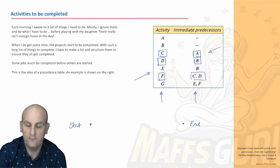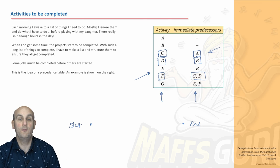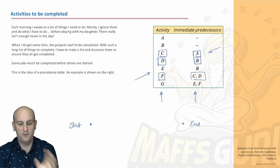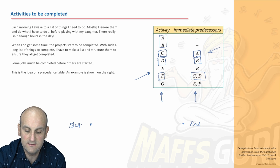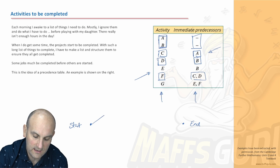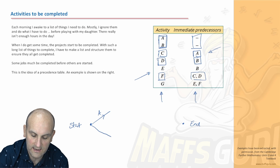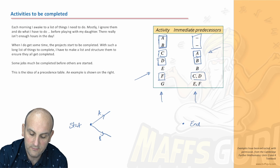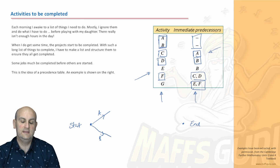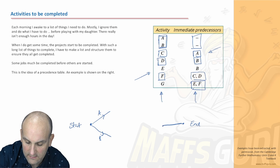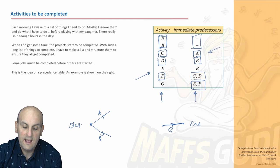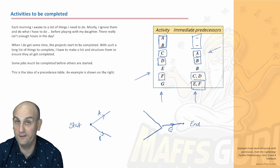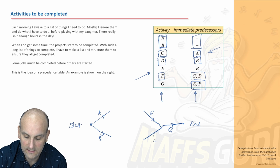There's no reason to believe you're going to get this right the first time — you're going to do this by trial and error. Because there is no immediate predecessor for activities A and B, I'm going to have these branch off of the start. From the other end, we know activity G can only start when E and F are finished, so I draw a line for G with E and F coming into it. I'm doing them in a particular order because I know the answer.